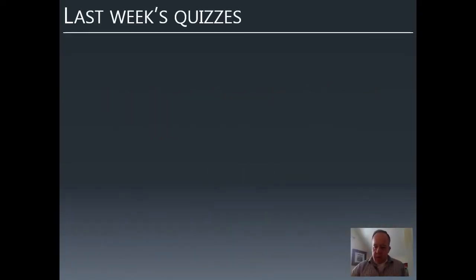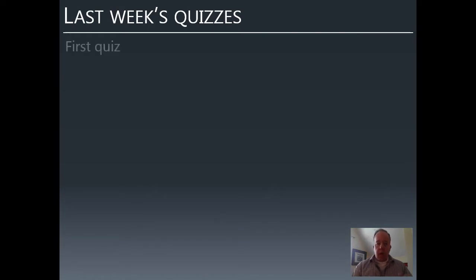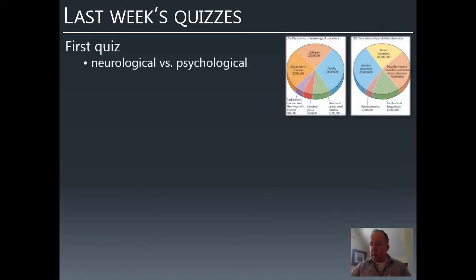Before we get to this week's new content, I want to go over last week's quizzes. Performance was generally very good, so keep up the good work. Be sure to take those quizzes by Friday nights. One of the most commonly missed questions was about the distinction between neurological and psychological disorders. That hinges on a figure from your book with two different pie charts—one for neurological and one for psychiatric disorders.